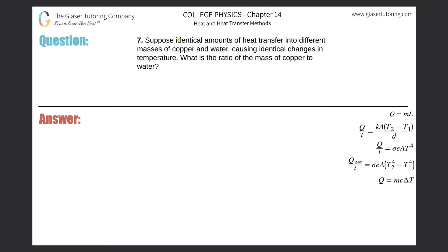Number seven: suppose identical amounts of heat transfer into different masses of copper and water, causing identical changes in temperature. What is the ratio of the mass of copper to water? On these types of problems, I like to work first with the question — what is it asking me? It's asking me to find the ratio of the mass of copper to that of water, so I need an answer that looks something like the mass of copper relative to the mass of water.